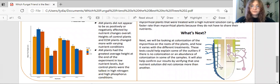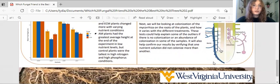Next, we'll be looking at the colonization of mycorrhiza on the roots, and this will help us determine if some of the outliers were the reason for some of the outliers. If some of the nutrient levels had an abundance of colonization and others didn't have any colonization. So it will help confirm our results by verifying that one nutrient solution didn't colonize significantly more than another.